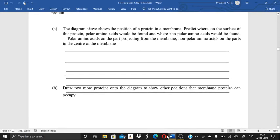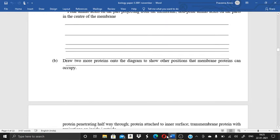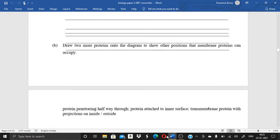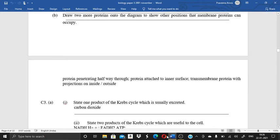Then the diagram above shows the position of a protein in a membrane. Predict where on the surface of this protein polar amino acids would be found and where non-polar amino acids would be found. Polar amino acids on the part projecting from the membrane. Then is, draw two more proteins into the diagram to show other positions that membrane proteins can occupy.